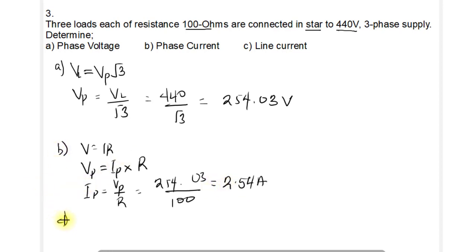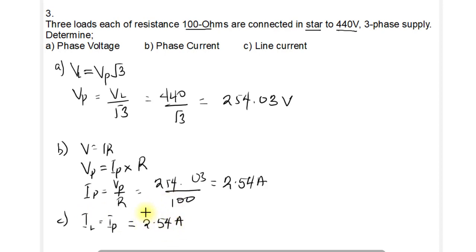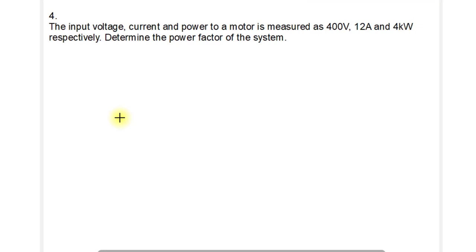In a star connection, the line current and phase current are always equal, so the line current IL equals the phase current, which is 2.54 amperes.